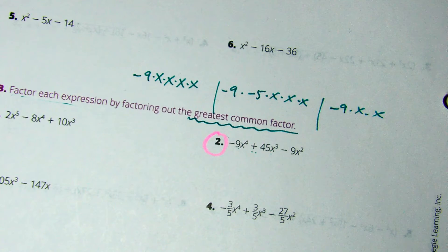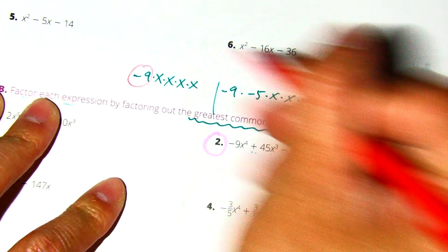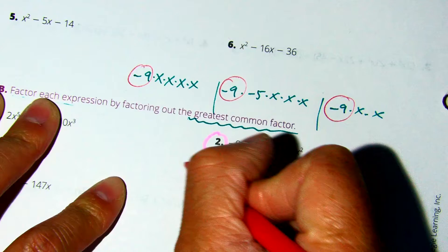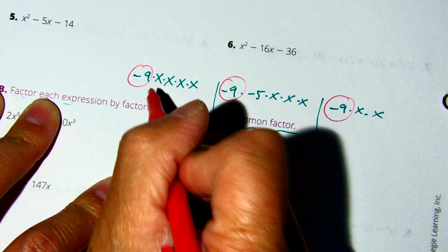Class, what do each of those have in common? Negative 9, and x squared.